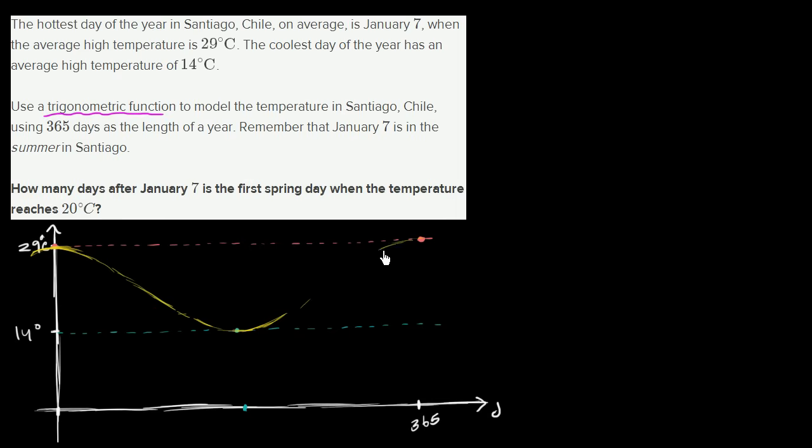And then I have the high point right over here, and then I just need to connect them. I've drawn one period of our trigonometric function, and our period is 365 days. If we go 365 days later, we're at the same point in the cycle, the same point in the year.